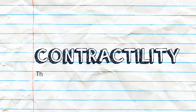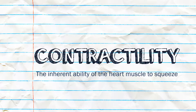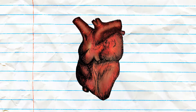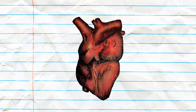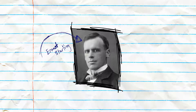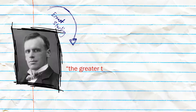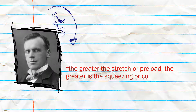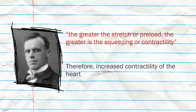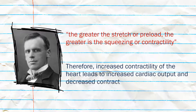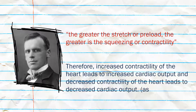Contractility is defined as the inherent ability of the heart muscle to squeeze. Simply put, contractility is a measure of how hard the heart muscle is contracting to pump blood out of the heart. Contractility is based on Frank-Starling's law, which states that the greater the stretch or preload, the greater the squeezing or contractility. Therefore, increased contractility of the heart leads to increased cardiac output, and decreased contractility leads to decreased cardiac output, assuming other factors of stroke volume do not change.